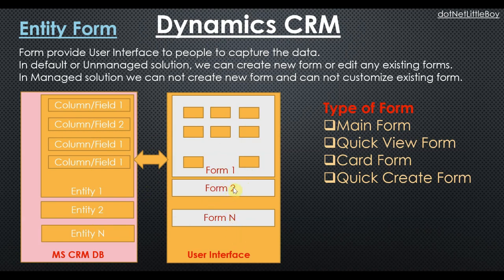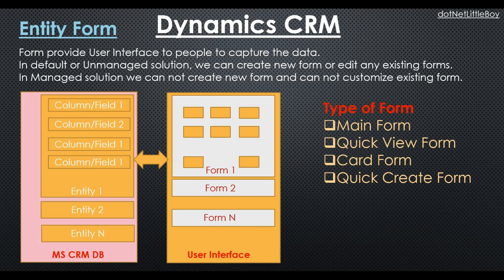We can have several entities and for each entity we can have several forms designed for different user interfaces. Basically we can have four different types of forms: the main form, quick view form, card form, and the quick create form. Main forms are used in Dynamics to capture data and have all the maximum components available. The same main forms can also be used as portal forms.